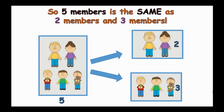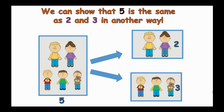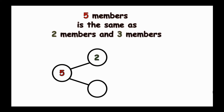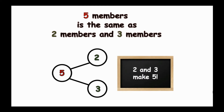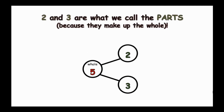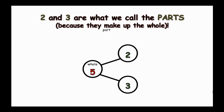So, five members is the same as two members and three members. We can show that five is the same as two and three in another way. Two and three make five. The five is what we call the whole because that's how many members there are in all. Two and three are what we call the parts because they make up the whole.